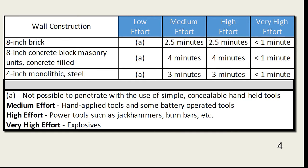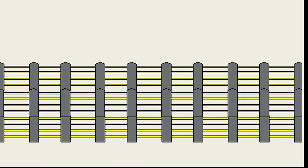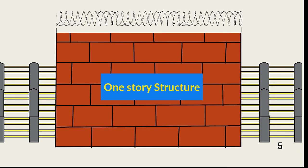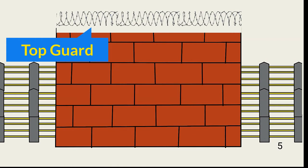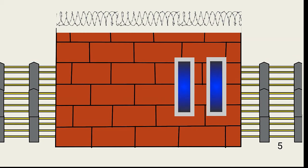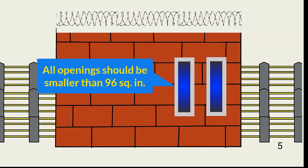Organizations must work with contractors to determine the best structural approach for walls. Walls that make up part or all of a site perimeter that are only one story high require a top guard of some type to deter roof access. Further, if windows are included in the perimeter wall, they should either be barred or be too narrow for human access.